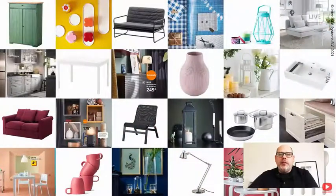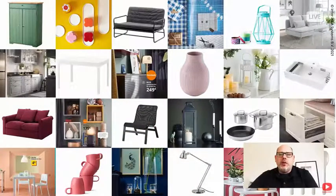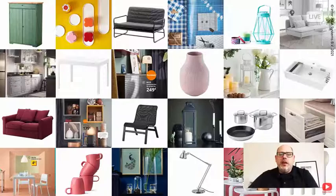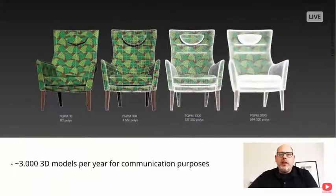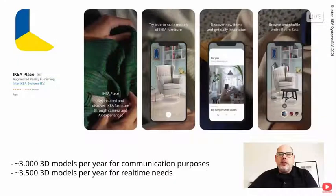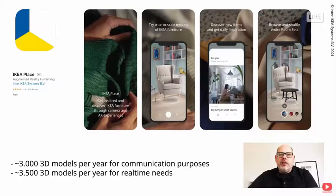Think of all the products we have, the different materials, colors and so on. The way we can produce so many images is by using 3D with heavily automated workflow. We produce approximately 3,000 new 3D models every year specifically for communication purposes, and another 3,500 specifically for real-time needs. For instance, to use an IKEA Place's AR app that you have hopefully been playing with at home. Okay, let's dive into our topic.